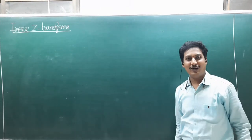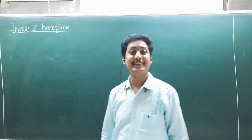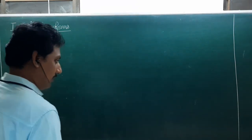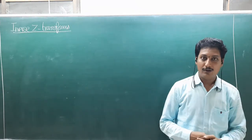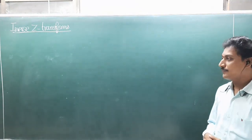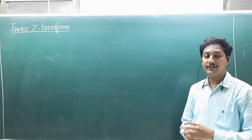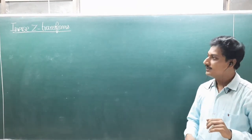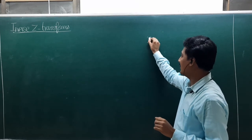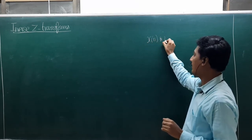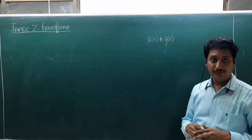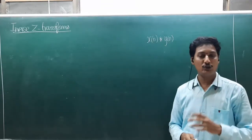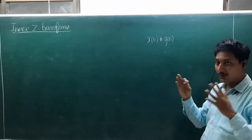Hi my dear friends, welcome back to our YouTube channel. This is ADC Max. In this video I'm going to introduce a new product — it is not the usual product of two numbers. It is a product between two causal sequences x(n) star y(n). x(n) and y(n) are called the two causal sequences.